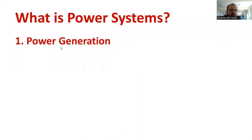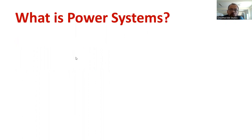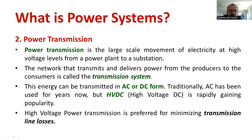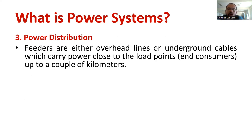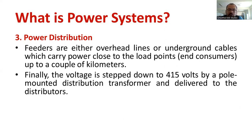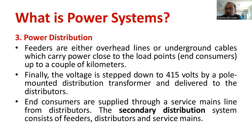Power generation uses both renewable and non-renewable energy sources. All generating stations belong to the power generating station, and the voltage is limited to 11 kV due to economic constraints. Power transmission is a large network divided into primary and secondary transmission, with HVAC and HVDC transmission systems available — high voltage power transmission is generally preferred to minimize losses. For distribution, the main parts are feeders; primary distribution is at 11 kV for industries, and secondary distribution at 415 volts for domestic customers, which can further be converted to 230 volts.